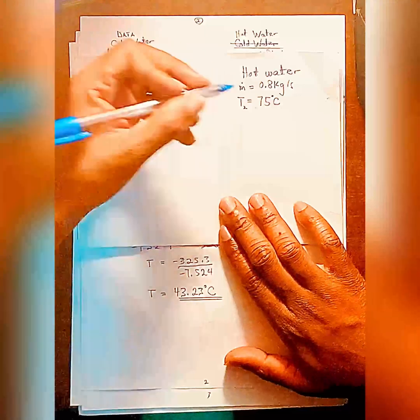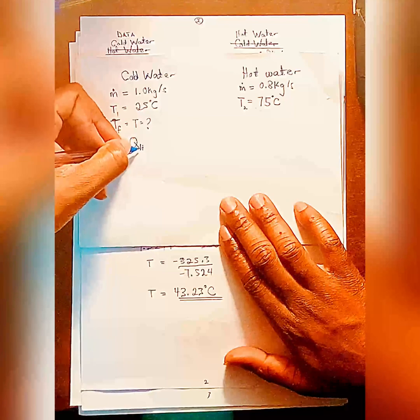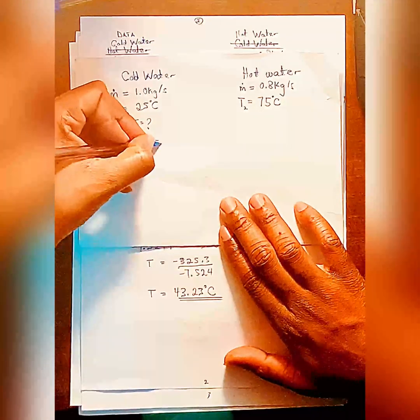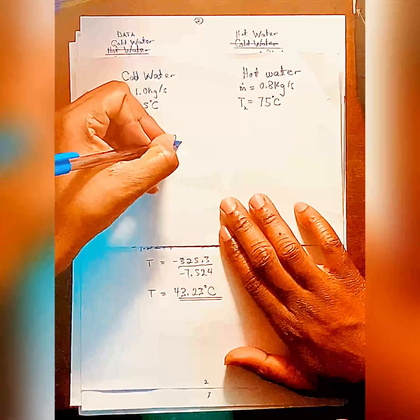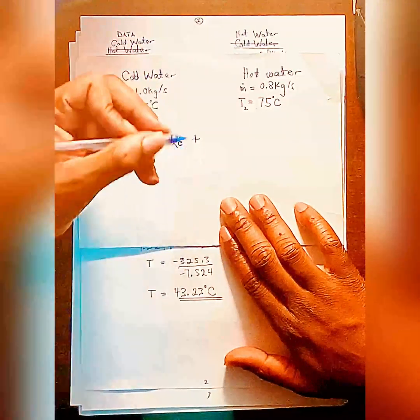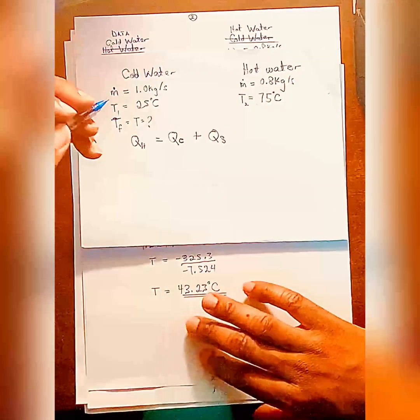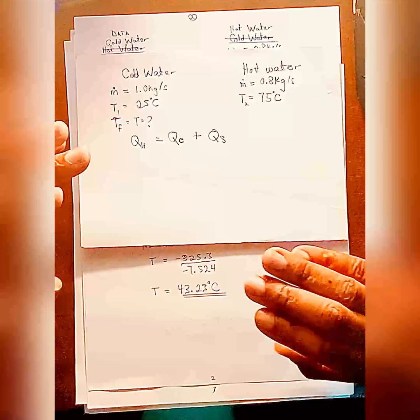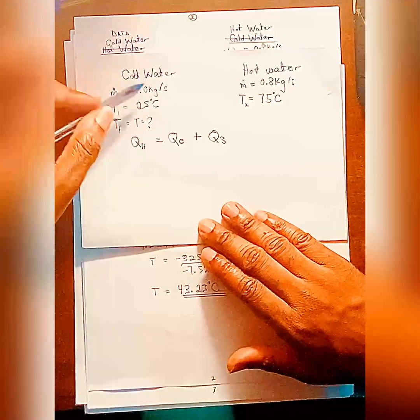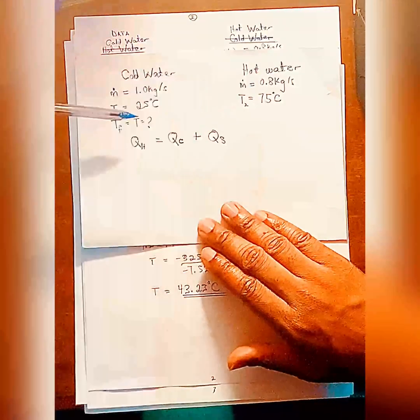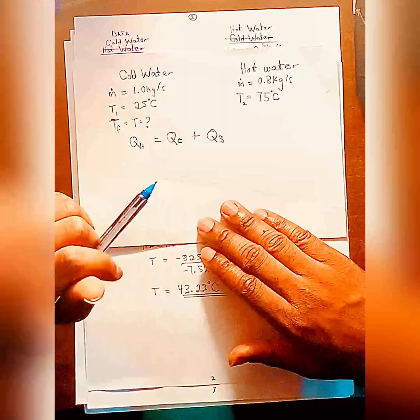Heat lost by the hot water QH is going to be equal to heat gained by the cold water QC plus heat lost to the surrounding QS. Because from the first law of thermodynamics, the total energy of the universe remains constant. That means if heat is lost by the hot water, it's either gained by the cold water or the surrounding.